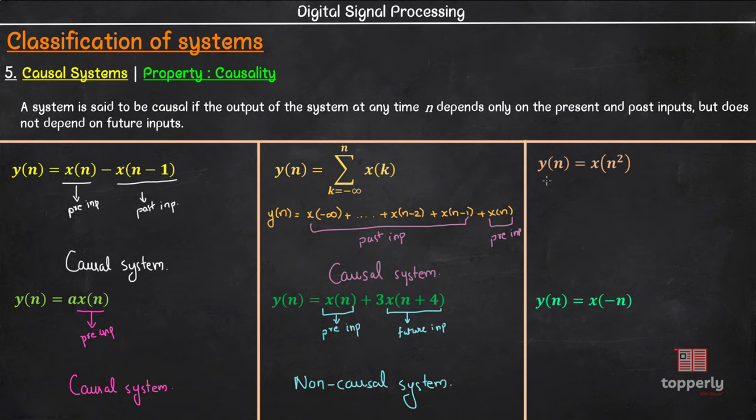Next, we have y of n equal to x of n square. Let us check the output at the instance n equal to 2.